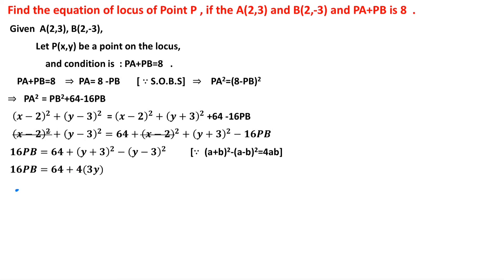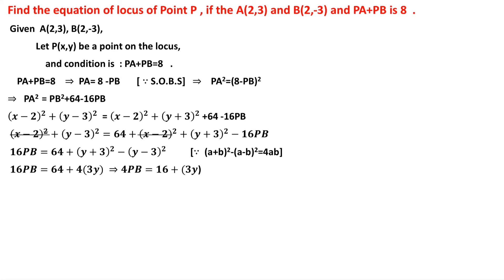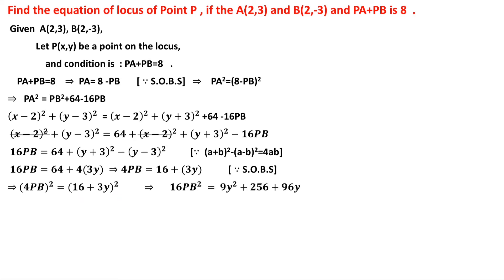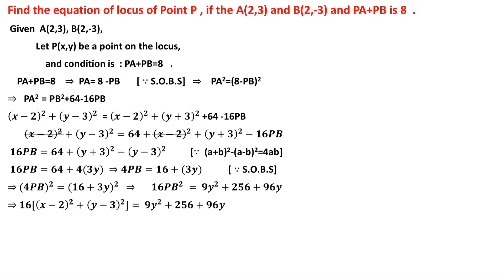Taking 4 common from both terms on the right and cancelling with 16 gives 4·PB = 16 + 3y. Squaring both sides again: 16·PB² = (16 + 3y)². Expanding (16 + 3y)² using (a + b)²: 16·PB² = 256 + 9y² + 96y. Now substituting PB² = (x - 2)² + (y + 3)².